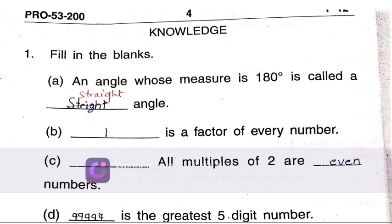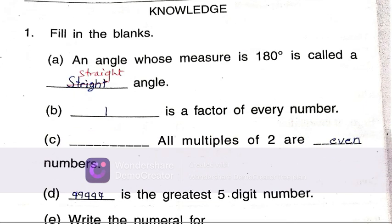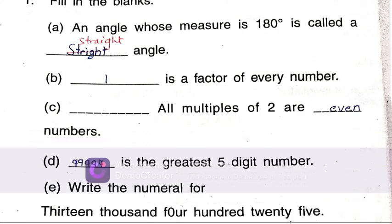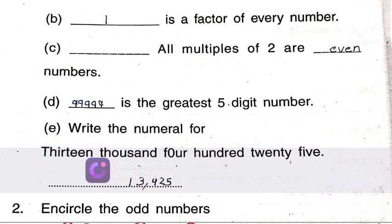The first question is an angle which measures 180 degrees. It is called a straight angle. Spelling should be correct. 1 is a factor of every number. All multiples of 2 are even numbers.